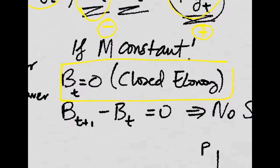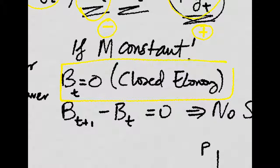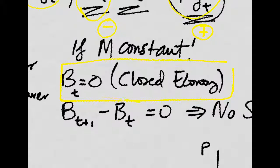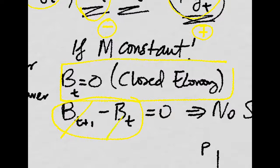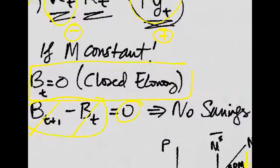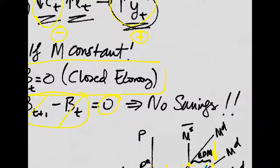And if we have that the money supply is constant, then savings is simply this — no money involved. Since bonds aggregate to zero and this is equal to zero, it's all equal to zero. So there are no net savings in a closed economy on aggregate terms.